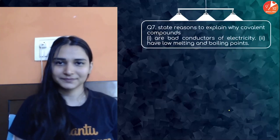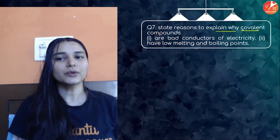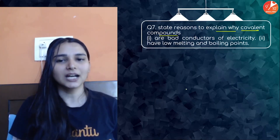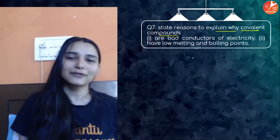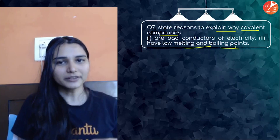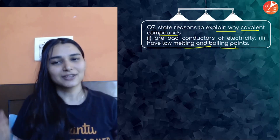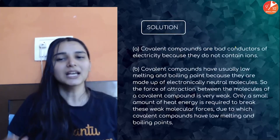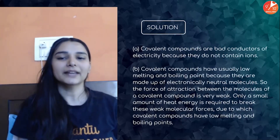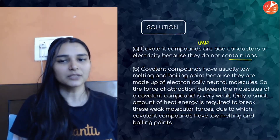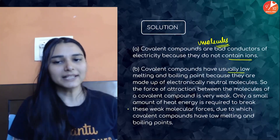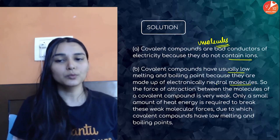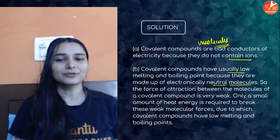Next question: state reasons why covalent compounds are bad conductors of electricity. Covalent compounds are made up of molecules, not ions or charged particles, so there are no free charges to conduct electricity. Additionally, the forces of attraction between molecules are weak — there are no electrostatic forces of attraction — which also results in low melting and boiling points compared to ionic compounds.